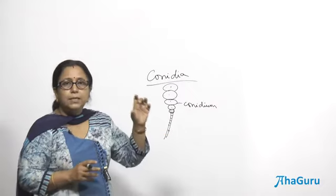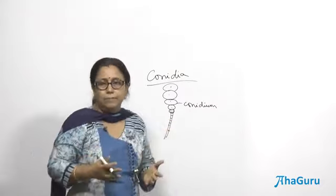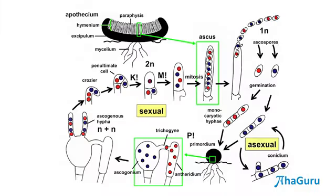Another feature of ascomycetes is that their hyphae are septate, meaning they have cross walls, unlike zygomycetes. During sexual reproduction, a plus strain and a minus strain are involved. One strain produces a club-shaped structure called ascogonium, and the other produces a bulge known as antheridium, both multinucleate. The ascogonium has a hook called the trichogyne, which joins the antheridium, causing nuclei to migrate from the antheridium into the ascogonium.